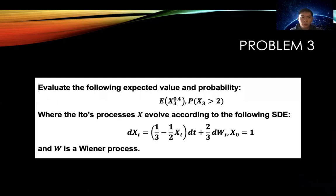In problem three, we are going to evaluate the following expected value and the probability where the Ito process X evolves according to the following SDE, where W is the Wiener process.